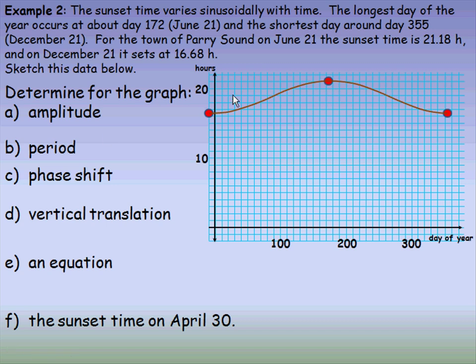The amplitude is half the vertical distance between a trough and a peak. If we find the difference between the peak at 21.18 hours and the trough at 16.68 hours and take half of that, we get 2.25 as the amplitude.